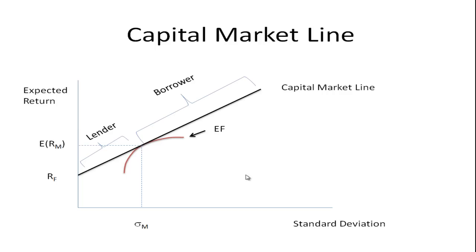How do we derive the capital market line? If we have a risk-free asset that we can borrow and lend at, and we draw a line from the risk-free asset that is just tangent to the efficient frontier, we get the capital market line.